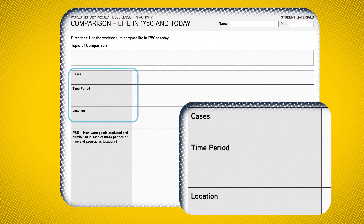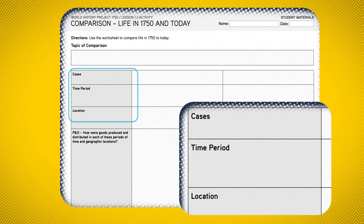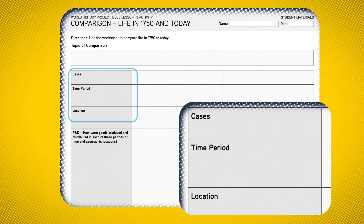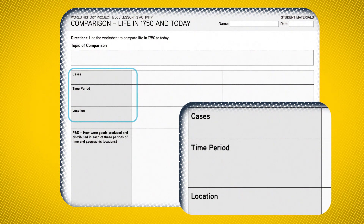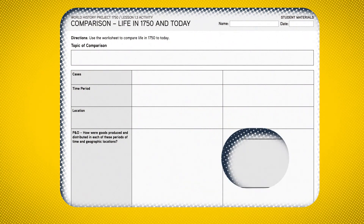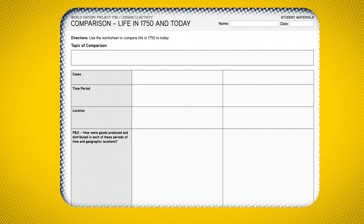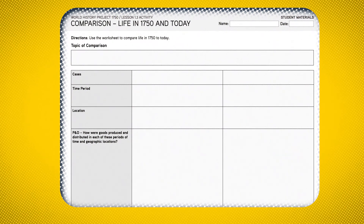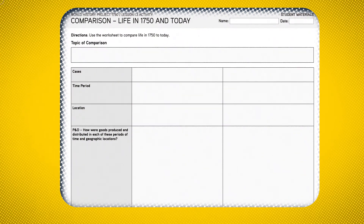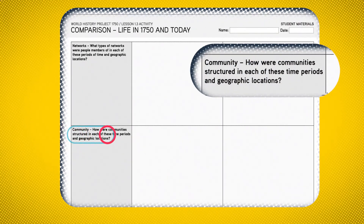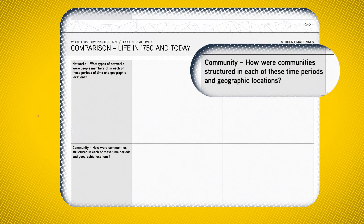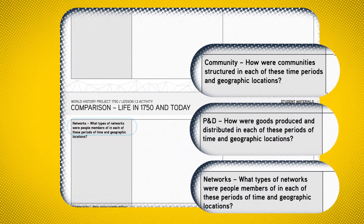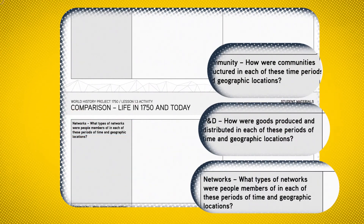It's a straightforward comparison that will set students up for more complex examples to come later in the course. Students will consider both cases through readings as well as their own background knowledge, and list out defining features of both topics using the lenses of three frames: communities, production and distribution, and networks.